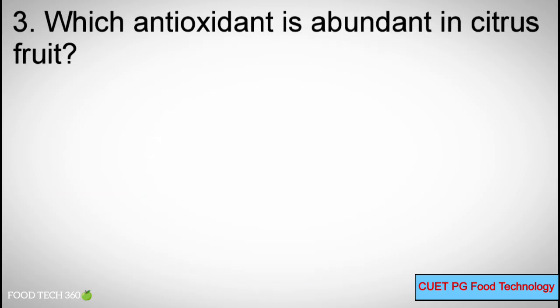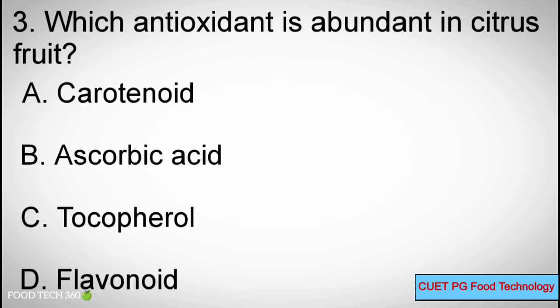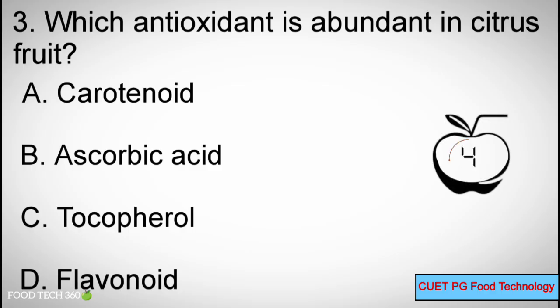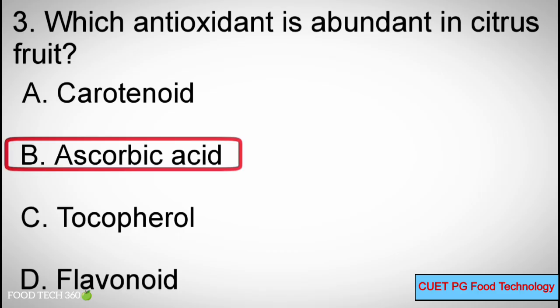Q3: Which antioxidant is abundant in citrus fruit? A. Carotenoid, B. Ascorbic Acid, C. Tocopherol, D. Flavonoid. Correct answer: B. Ascorbic Acid.